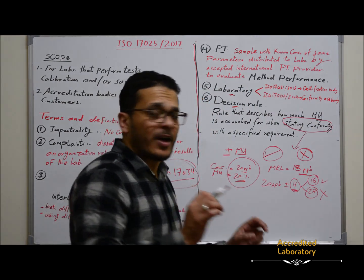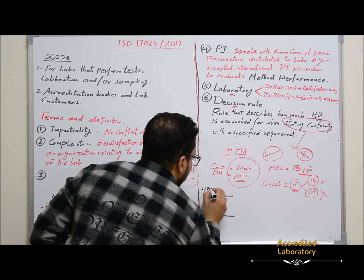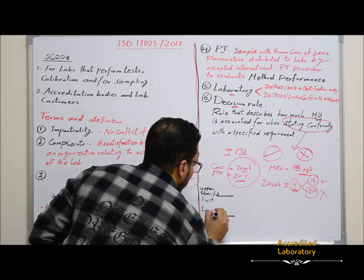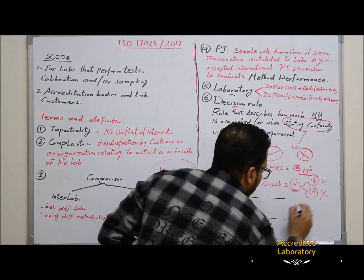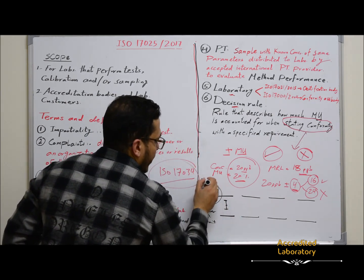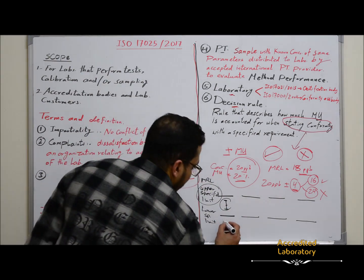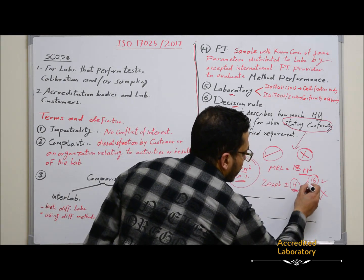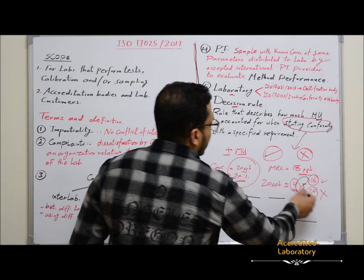A diagram illustrates three scenarios using an upper and lower specified limit. First, where the result plus measurement uncertainty both fall within the specified limit — the sample is compliant. Second, where both the result and measurement uncertainty fall outside the specified limit — the sample is non-compliant.